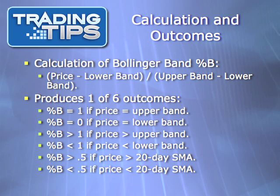Percentage B is greater than 0.5 when the price is above the middle band, which of course is the 20-day simple moving average. Percentage B is less than 0.5 when the price is below the 20-day SMA.